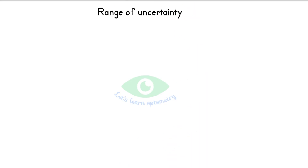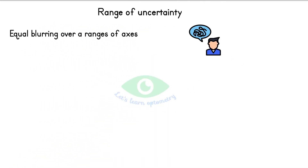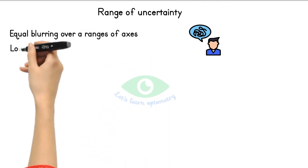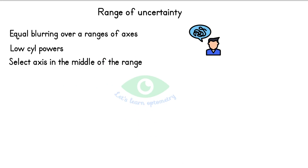Range of uncertainty: In real clinical practice, most patients will say both positions are equally blurred over a range of axes. This is more common with low cylindrical powers. In this case, identify the range and find where the patient indicates rotation in the opposite direction at each end, then select the axis in the middle of that range. Note that the point exactly 90 degrees away from the true axis will also behave the same way.